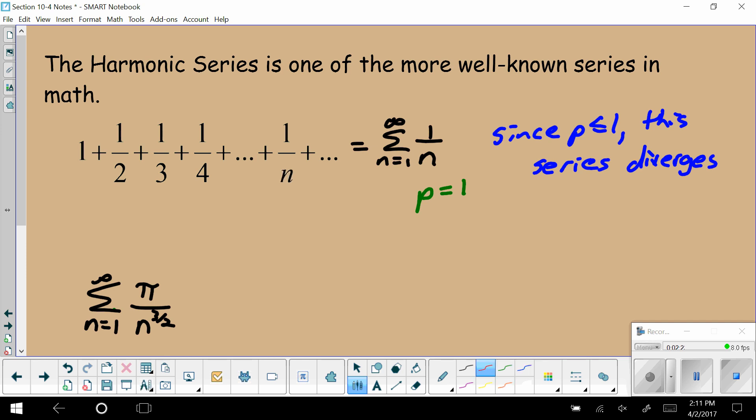So, if we were to take an example here, if we had the sum from n equals 1 to infinity of pi over n squared, we have pi as a constant on top and n to the second on the bottom. Well, since the power p is greater than 1, this series converges.